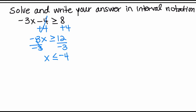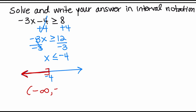This means I want all numbers less than or equal to negative 4. Graphing it helps understand the interval notation: at negative 4 I place a bracket and shade to the left, because I want everything less than or equal to negative 4. Reading left to right, we start from negative infinity until we reach negative 4, and we include negative 4. So the answer written in interval notation is negative infinity to negative 4 with a bracket at negative 4.